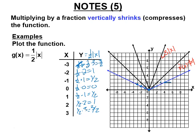Notice the slopes. For the shrunk function y = ½|x|, the slope on one side is one half and on the other side is negative one half. For the original y = |x|, the slope was 1 on one side and negative 1 on the other. For the stretch y = 3|x|, the slope was 3 on one side and negative 3 on the other. We're going to use that observation in a moment.